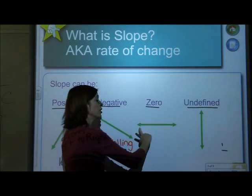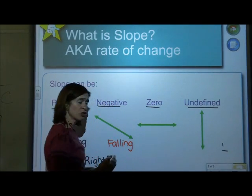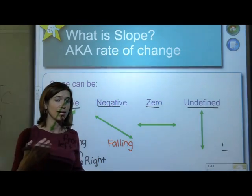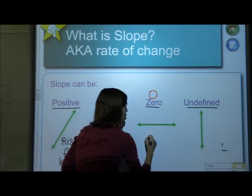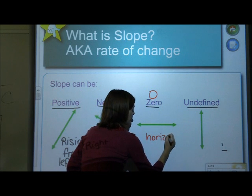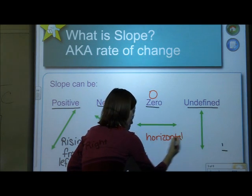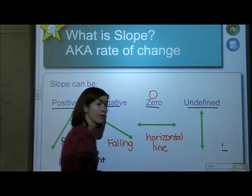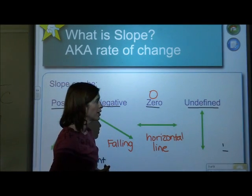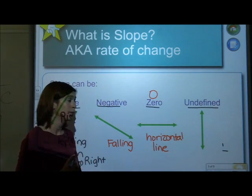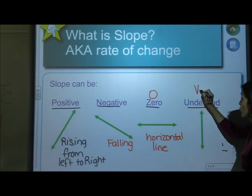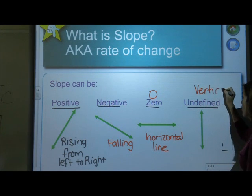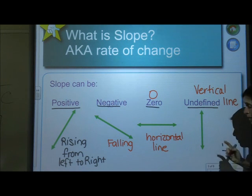It also can have a zero slope. This is a zero slope. Can you ski on a zero slope? You sure can. You can cross-country ski. So it is a slope. But it's zero. This is actually a horizontal line. All right? And then we look at the next one. An undefined slope. So it is a straight line going down, and it is a vertical line.